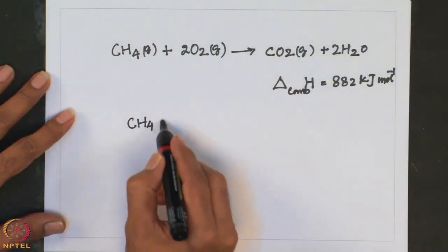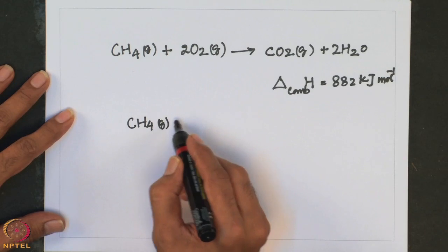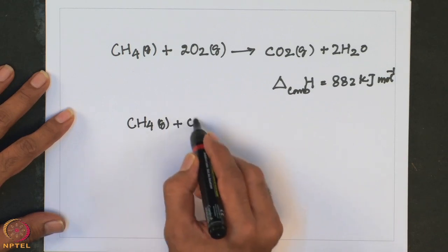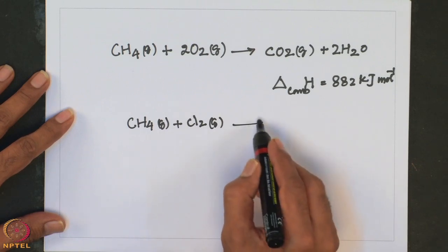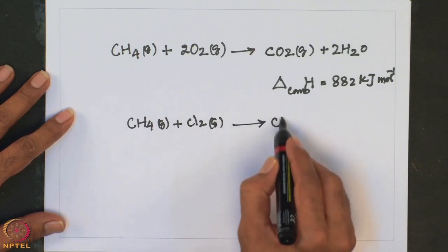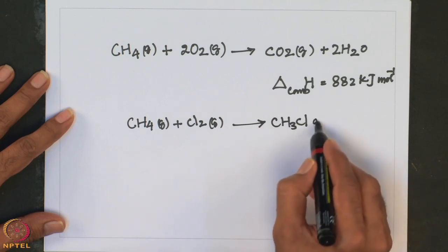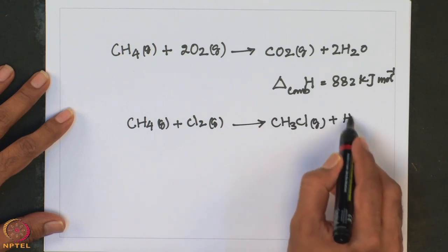Apart from this combustion reaction, methane is not very reactive. It is not hydrolyzed by water and reacts with halogens only when exposed to ultraviolet radiation, involving a radical mechanism. For example, if you take CH4 gas and pass Cl2 gas under photochemical conditions, it gives CH3Cl with the formation of HCl.